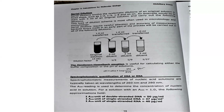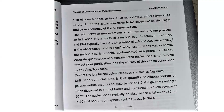Spectrophotometric quantification of DNA or RNA. Spectrophotometric measurements of nucleic acid solutions are typically taken at wavelengths of 260 nm and 280 nm. The A260 reading is used to determine the concentration of nucleic acid in a solution. For a solution with an A260 equal to 1, the following approximations hold. For oligonucleotides, an A260 of 1 represents approximately 20 to 33 micrograms per mL.